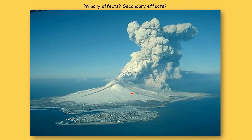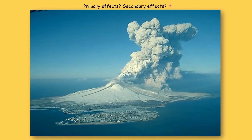The next hazard is a volcano erupting. The primary effect happens because of the volcano erupting — in this case, it would be the ash and gas cloud that you can see. The secondary effect happens because of the primary effect, so here it could be aeroplanes not being able to fly, people not being able to go on holiday, and businesses losing lots of money.